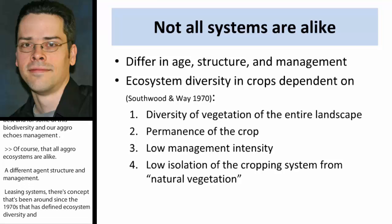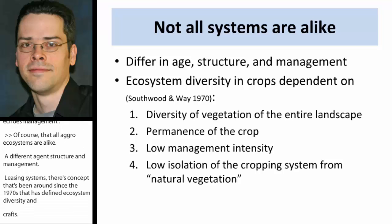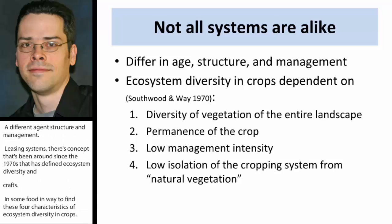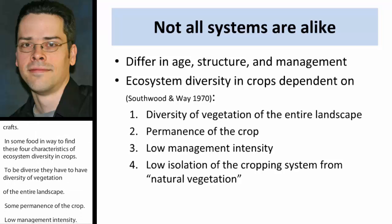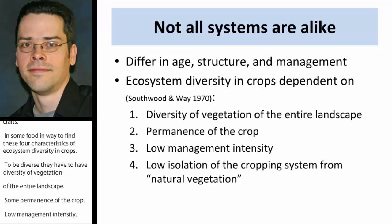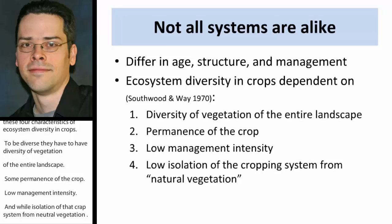To be diverse, an ecosystem must have diversity of vegetation across the entire landscape, some permanence of the crop, low management intensity, and low isolation of that cropping system from natural vegetation. For the purposes of this talk, one agroecosystem that fits all four of these characteristics would be rangeland systems.